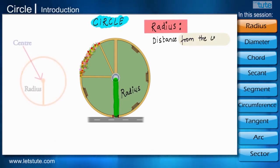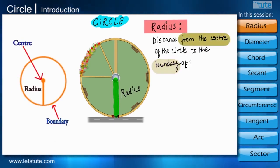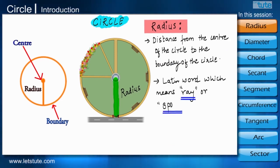The radius is the distance from the center of the circle to the boundary of the circle. Radius is a Latin word which means ray or the spoke of a wheel. Radius is denoted by a small letter r.